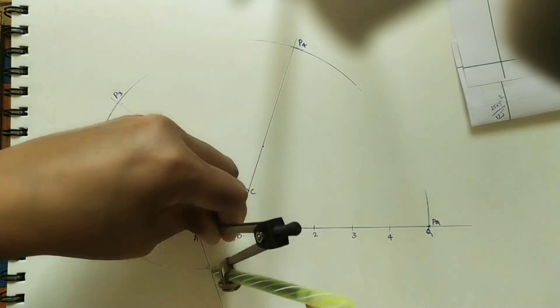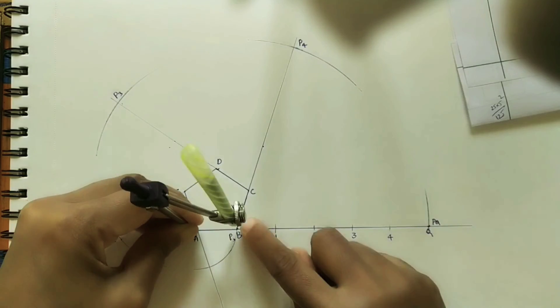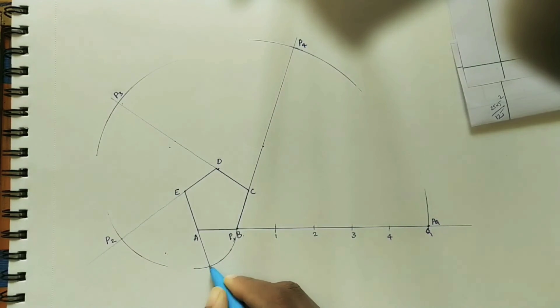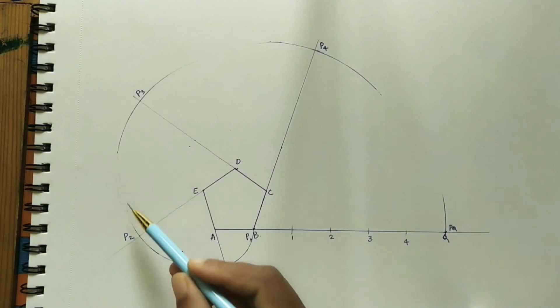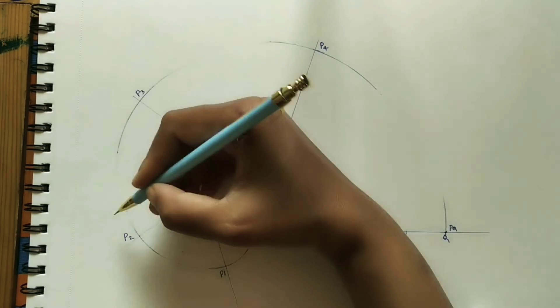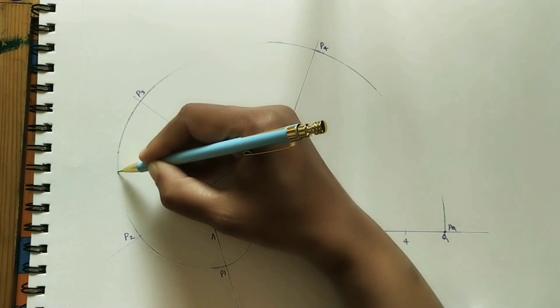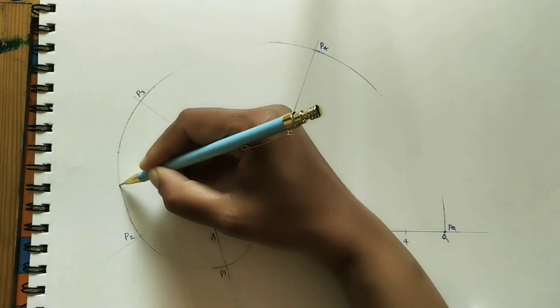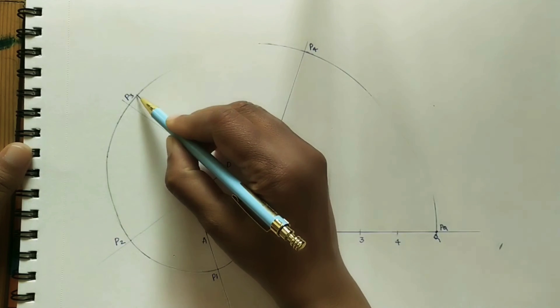Join all the P points, we will get the involute. Draw the curve with the freehand. Join the arcs, join P4, PQ.